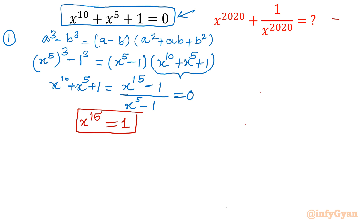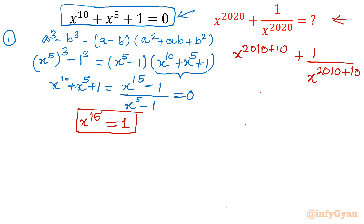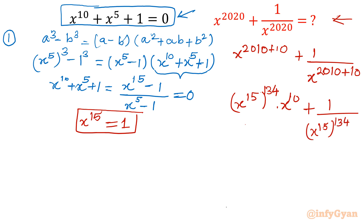Now let's simplify x power 2020 plus 1 over x power 2020. I will write the exponent 2020 as 2010 plus 10. Now 2010 is divisible by 15, so I write x power 15 whole power 134 times x power 10 in the numerator, and similarly x power 15 whole power 134 times x power 10 in the denominator. Since x power 15 equals 1, those terms become 1, and what remains is x power 10 plus 1 over x power 10.